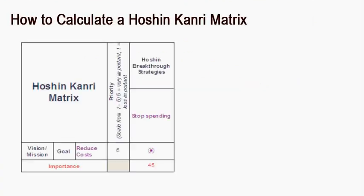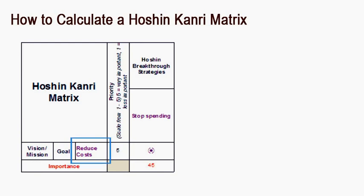Let's discuss how to calculate a Hoshin-Kanri matrix. The need is to reduce costs. Reducing costs is very important, so it is given an importance rating of 5.